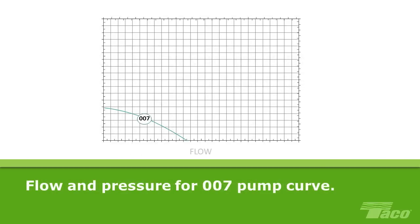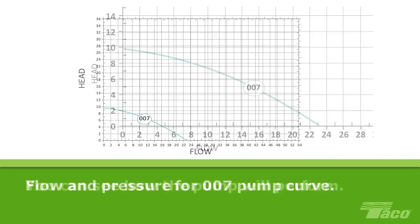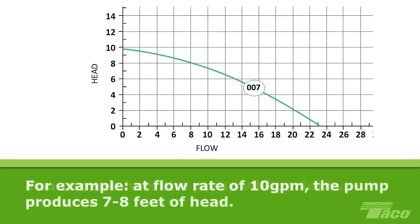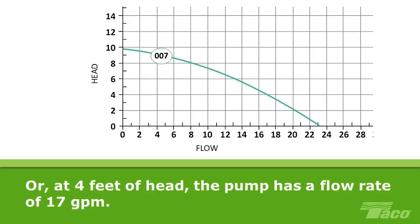Let's see how these two factors look on a pump curve graph. The curve enables you to see how this pump will perform at any given point within its performance range. For example, at a flow rate of 10 gallons per minute, the pump will produce between 7 and 8 feet of head. Or, looking at it the other way around, at 4 feet of head, this pump will generate a flow rate of just about 17 gallons per minute.